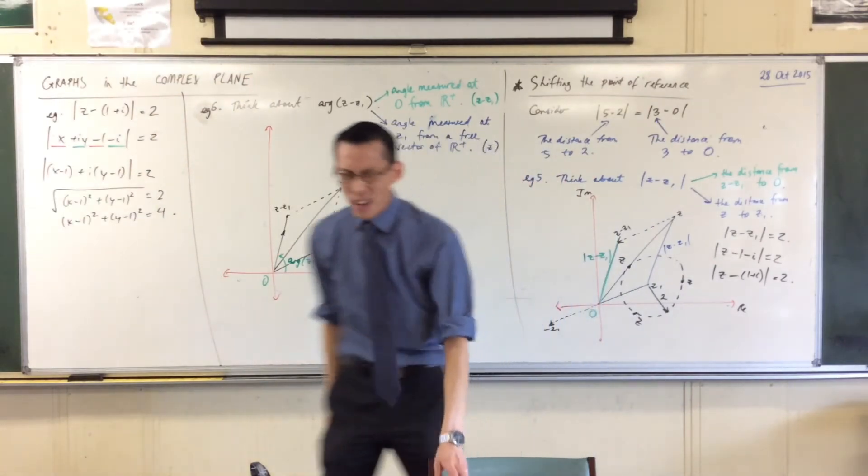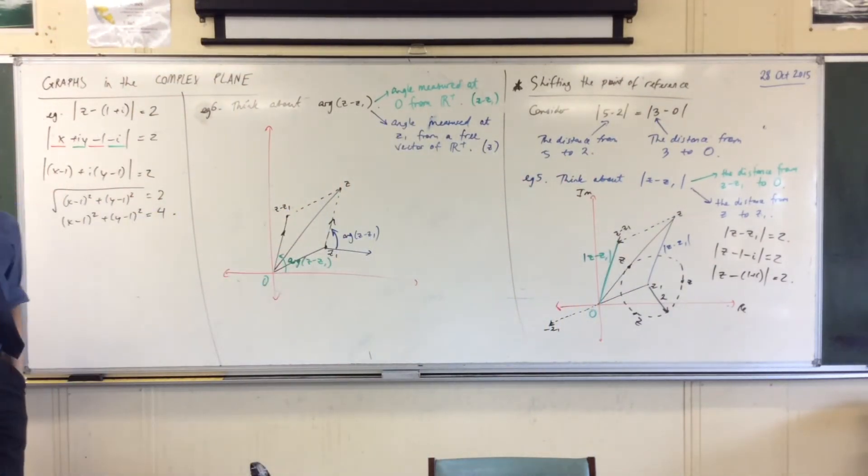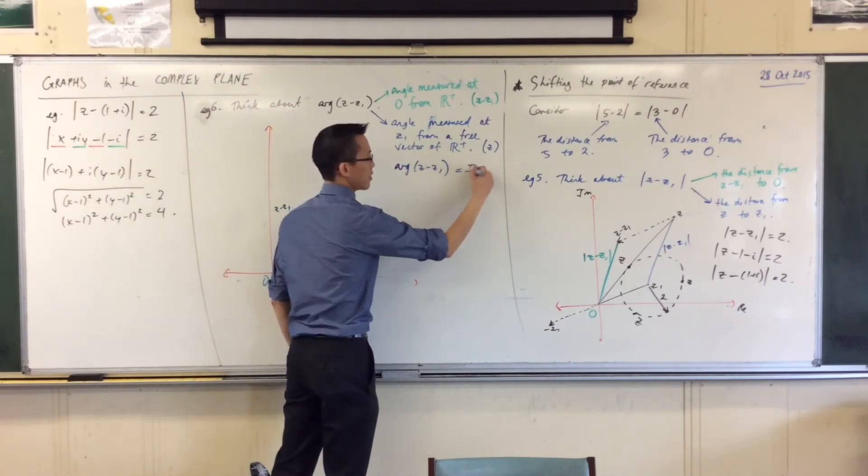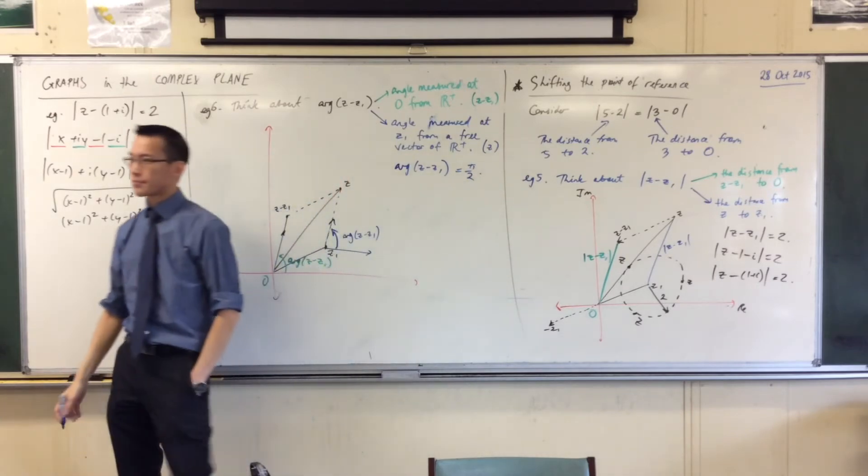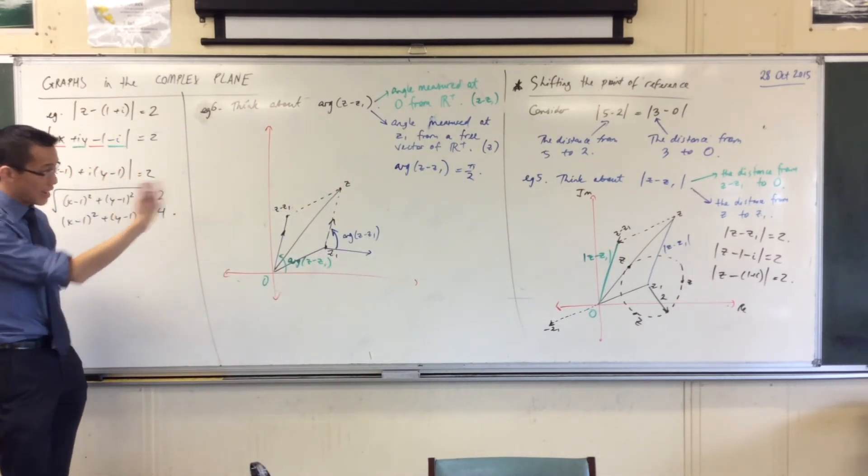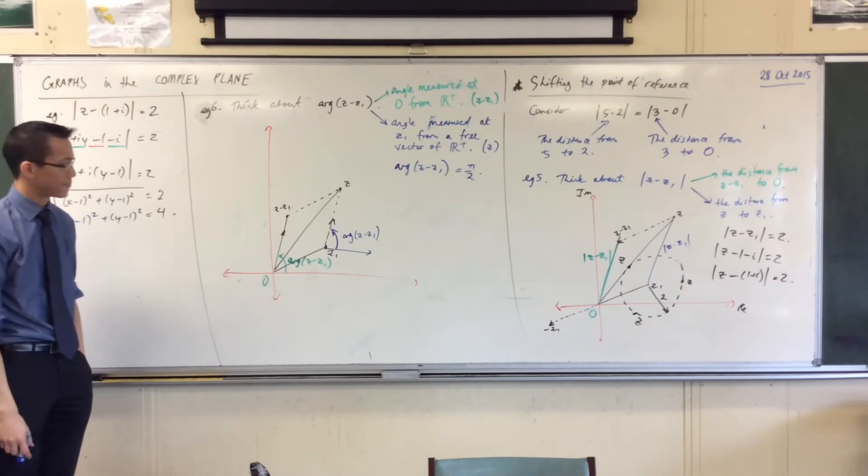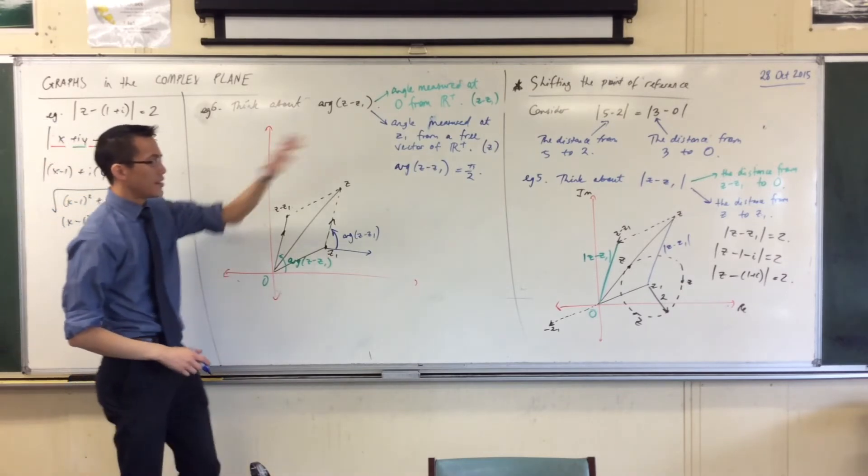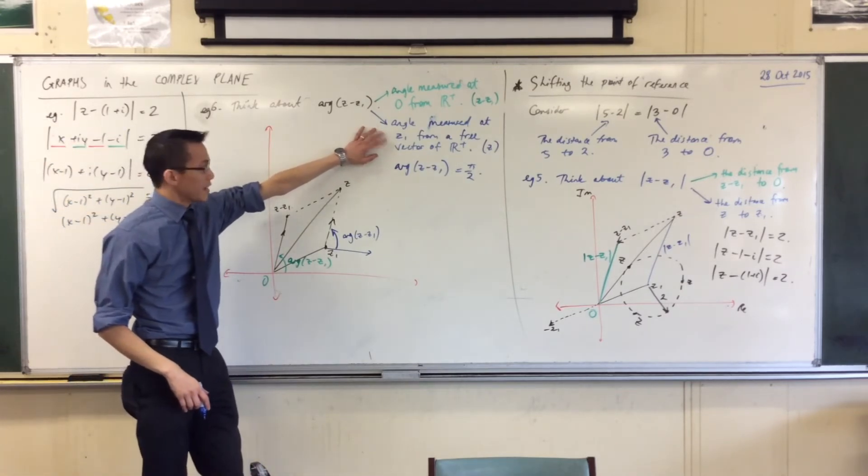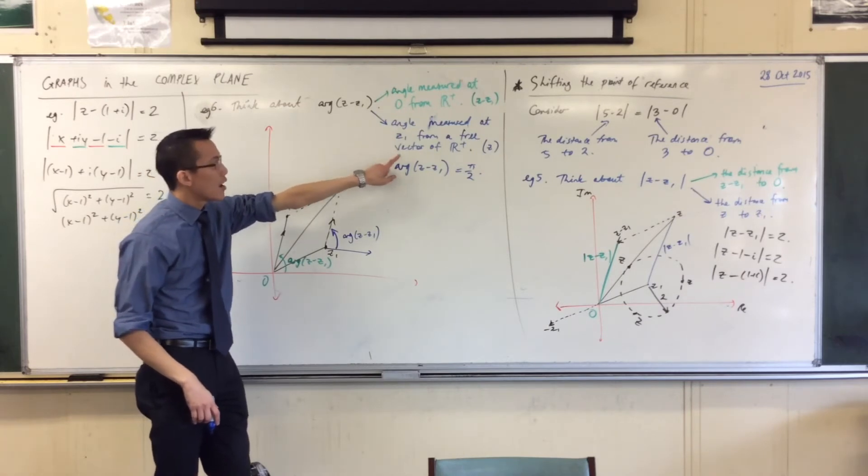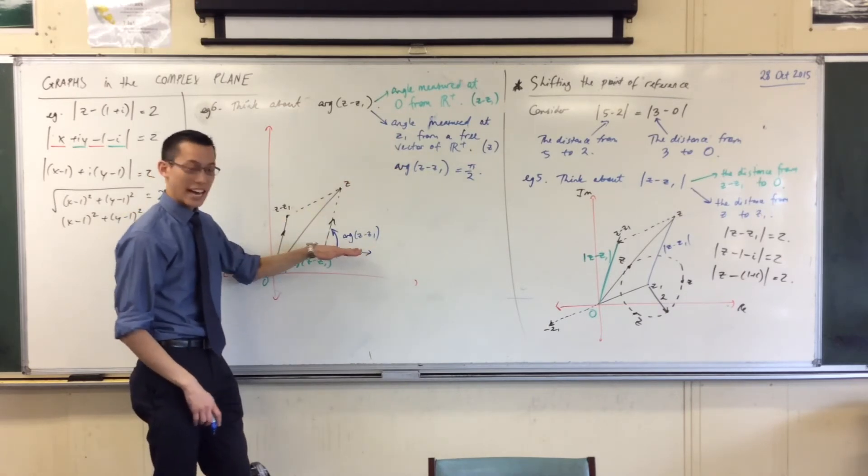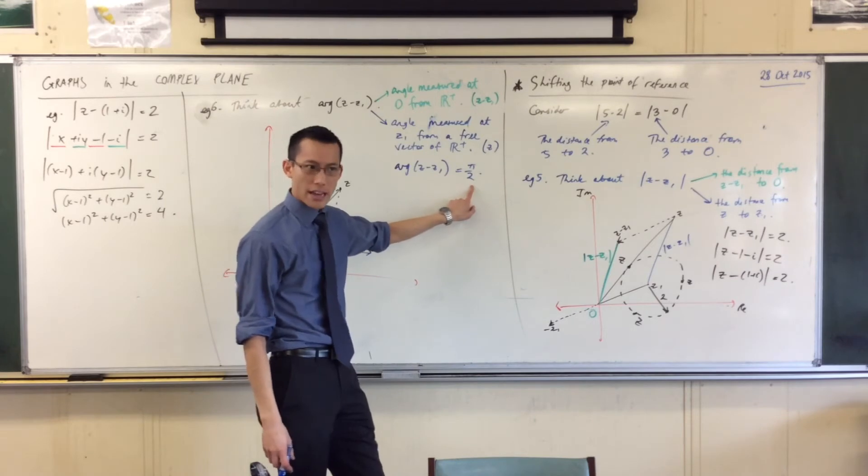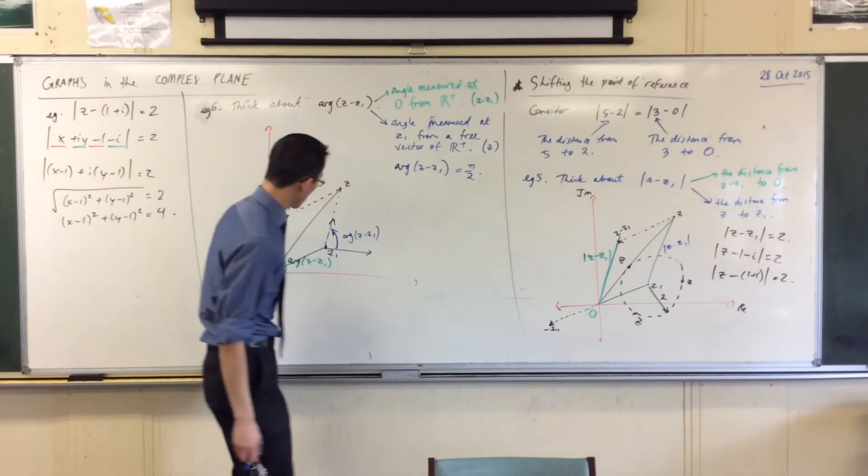So now if I asked you, just like I did before, what is the locus of points such that the argument of that point take away z1 is equal to pi on 2? What I want is this way of thinking. z1 is my new point of reference, and when I measure from the horizontal, from the positive real axis, up to whichever complex numbers you want, that set, I want to get pi on 2 radians. It's 90 degrees.